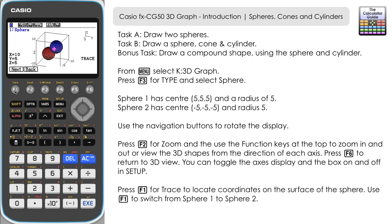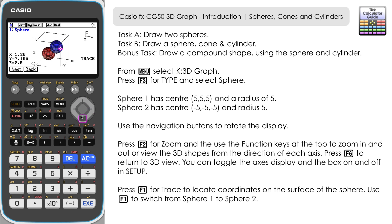Press F1 for trace. Here we can trace coordinates around the surface of the sphere — as you move the direction keys the x, y, z coordinates displayed in the left-hand corner change depending on the cursor position. By default it's on sphere 1. Press F1 then next to move to sphere 2, where you can find different coordinates using the cursor on its surface.